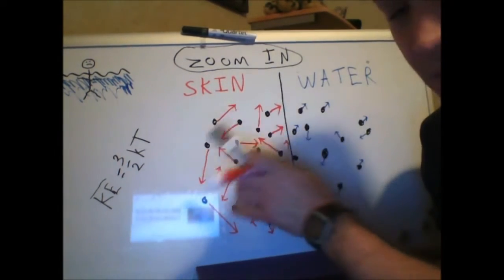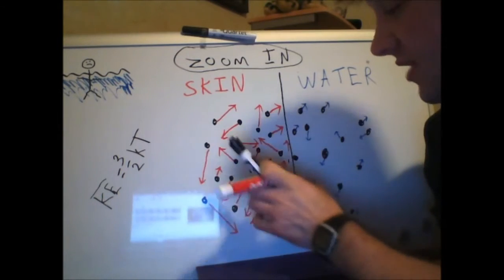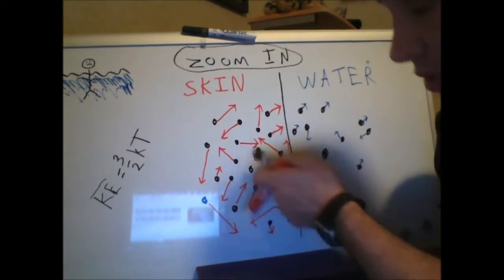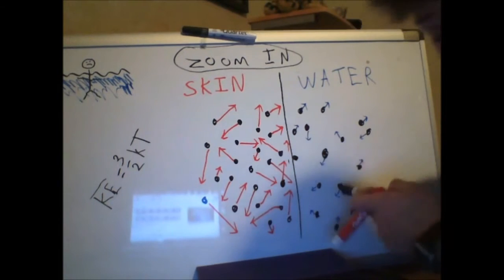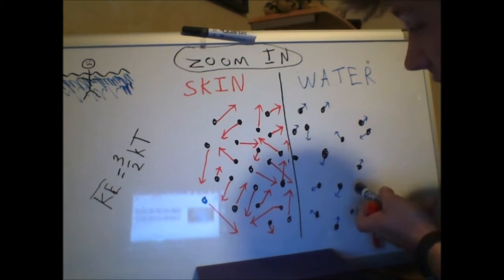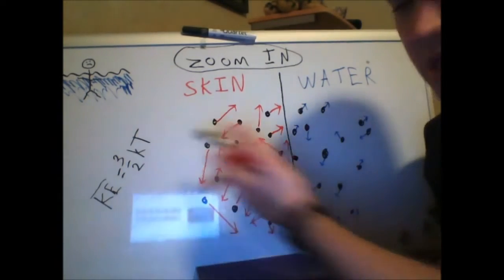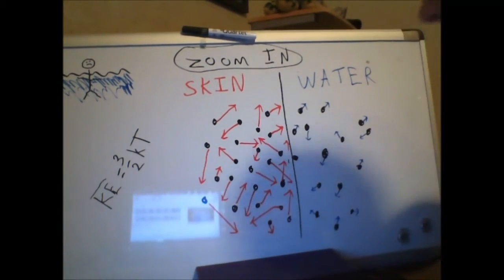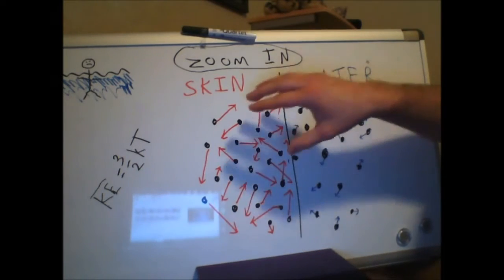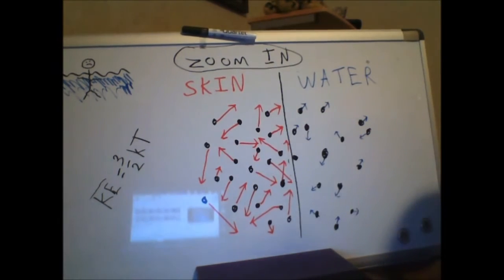Now in his warm skin, we would find that the molecules are actually moving pretty fast, whereas the cold water molecules are moving very slow. In fact, it's this average speed of these molecules that's related to the temperature of the material themselves.